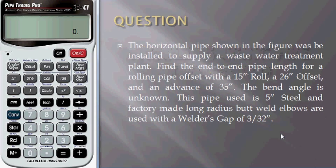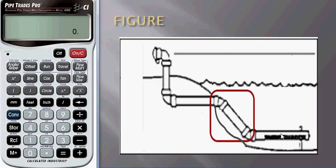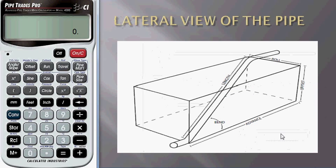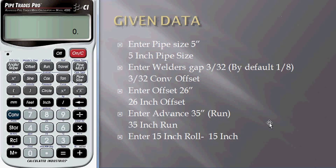Now let's see the figure of the equation. Here we need to find end to end pipe length and the bend angle is unknown. We can calculate bend angle too. The lateral view of the pipe shows length, roll, offset, and advance which is run. We can calculate length and bend angle.